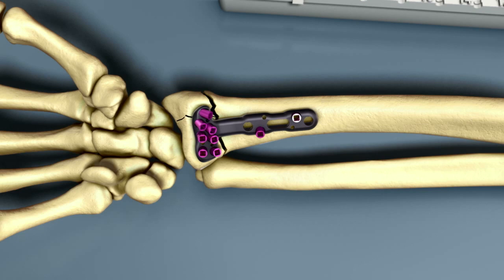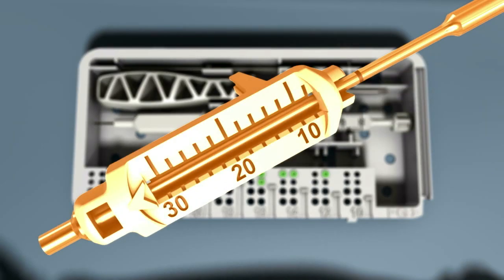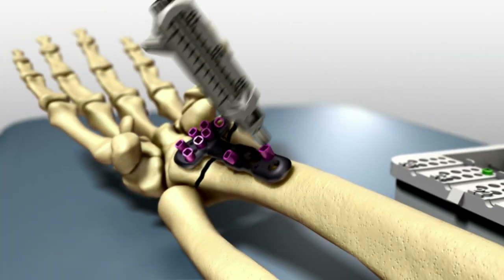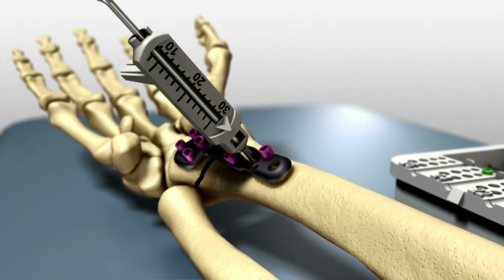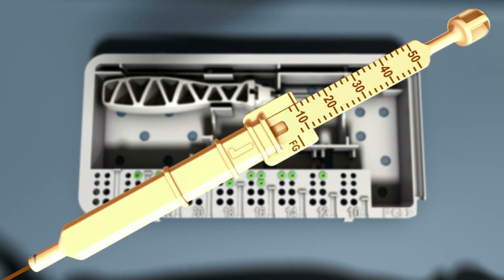Use a 2.7 millimeter locking screw through the oblong hole, which allows for refining the plate position. The 2.2 millimeter soft tissue guide is pre-loaded onto the 2.2 millimeter drill bit. The soft tissue guide should be used to drill through the non-locking screw holes.